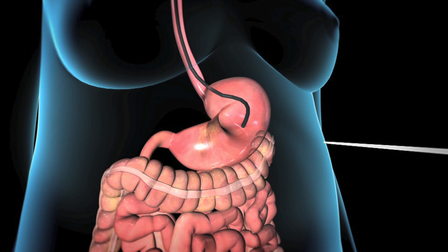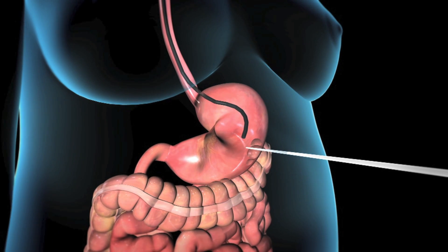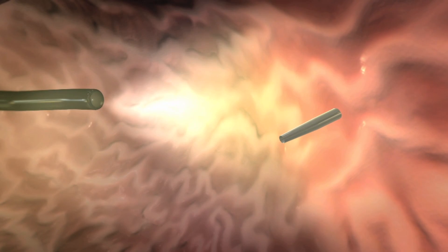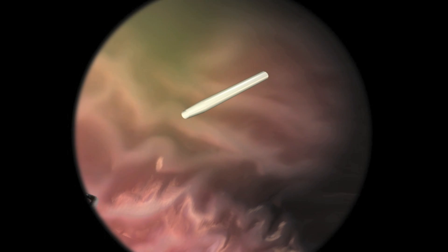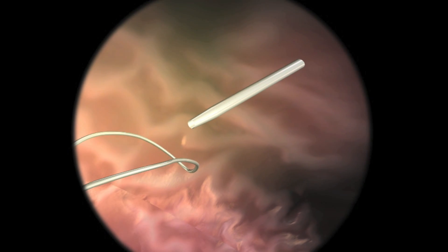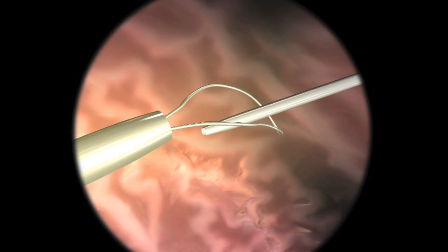Next, your doctor will insert a needle through your skin into your stomach at the location where the A tube is to be placed. The endoscope will be used to locate the end of the needle inside your stomach and encircle it with a wire snare.